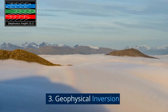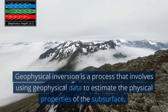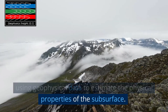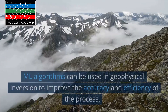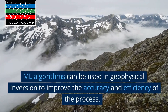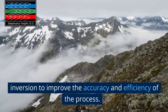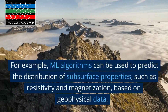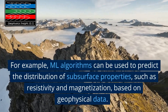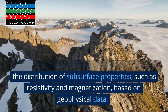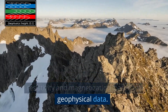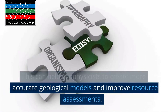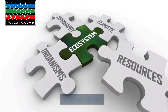3. Geophysical inversion. Geophysical inversion is a process that involves using geophysical data to estimate the physical properties of the subsurface. ML algorithms can be used in geophysical inversion to improve the accuracy and efficiency of the process. For example, ML algorithms can be used to predict the distribution of subsurface properties, such as resistivity and magnetization, based on geophysical data. This can help geophysicists to create more accurate geological models and improve resource assessments.